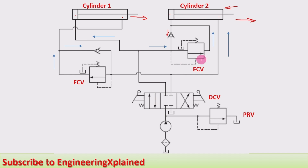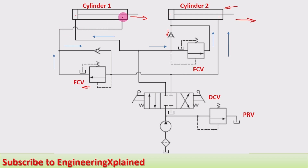Here the retraction of cylinder two is taking place during this operation. After the complete retraction, the pump will be continuously running, therefore pressure will be built up in the circuit. The check valve there will be closed in this direction by pilot pressure operation, and this sequencing valve will get opened — it allows the flow of fluid to cylinder one on the rod end side. Then retraction of cylinder one takes place after the retraction of cylinder two.